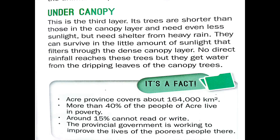The next layer is the under canopy — the third layer. Its trees are shorter than those in the canopy layer and need even less sunlight, but they need shelter from the heavy rain. They can survive in the little amount of sunlight that filters through the dense canopy layer. No direct rainfall reaches these trees, but they get water from the dripping leaves of the canopy trees.